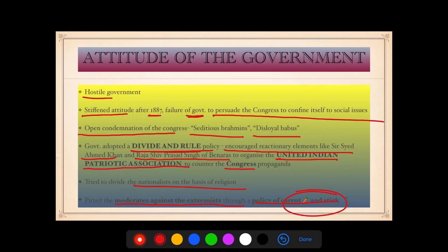The government also pitted the Moderates against the Extremists through a policy of carrot and stick. The basic idea behind this policy was providing carrot and stick at the same time — taking some actions in favor of demands while simultaneously making rules that went against Indian interests. If you want a detailed video on the Britishers' carrot-and-stick policy, you can write in the comment section.